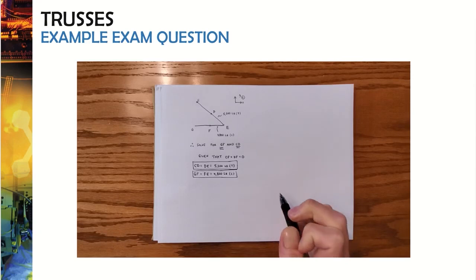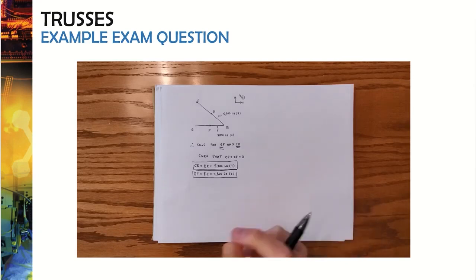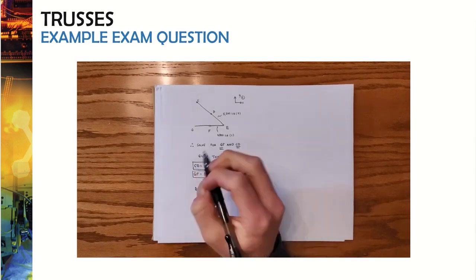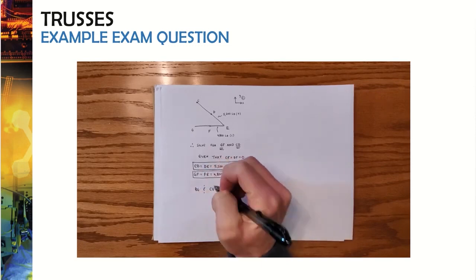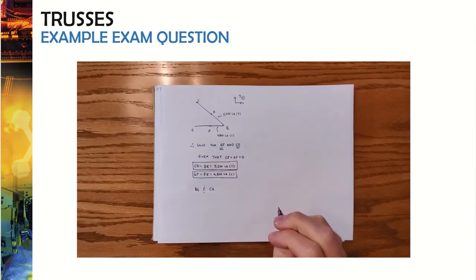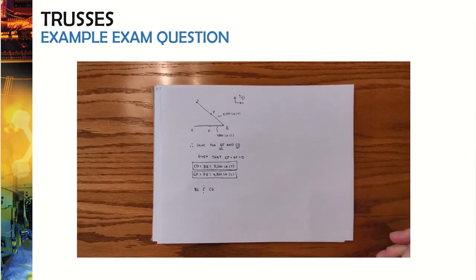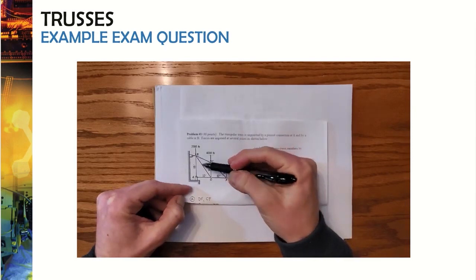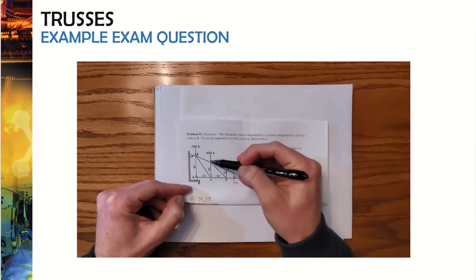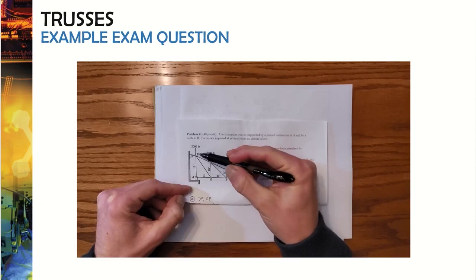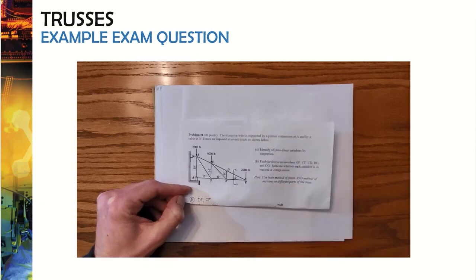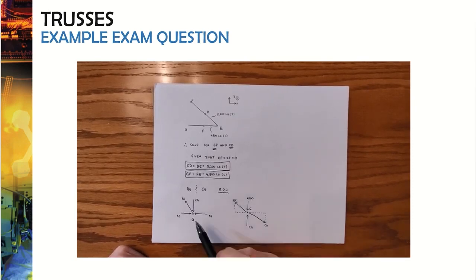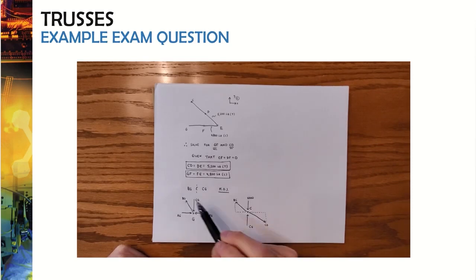Next we need to solve for members BG and CG. These members don't have a clean section cut that would expose just those two, so we'll use method of joints. Drawing method of joints at point G and point C: at joint G we know FG = 4,800 lb, but we don't yet know CG, EG, or AG — so joint G is currently unsolvable. We must start at joint C.